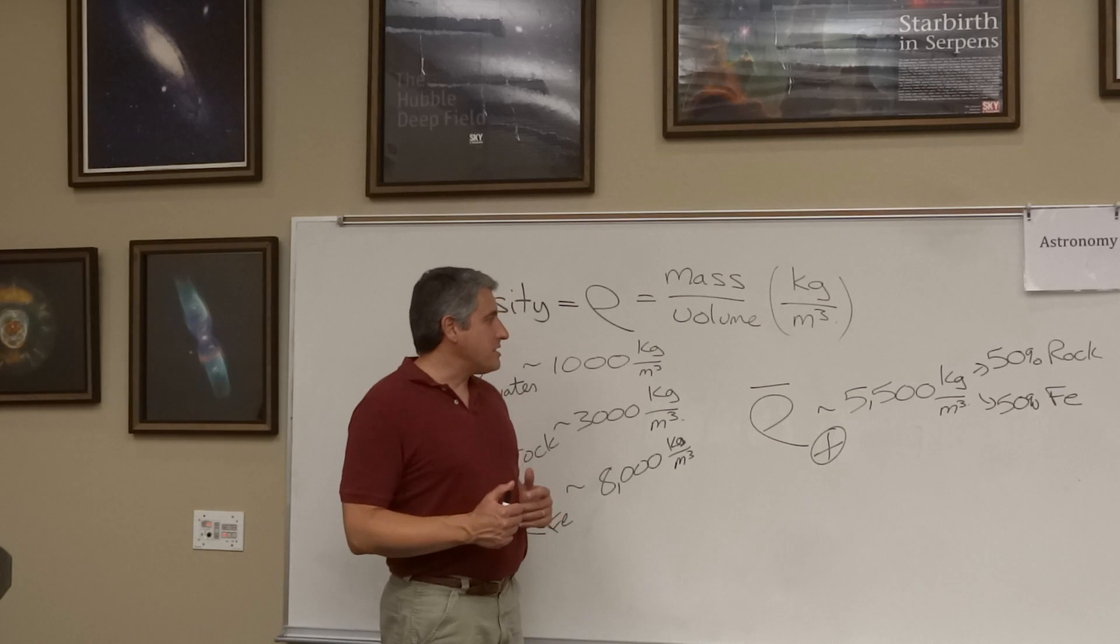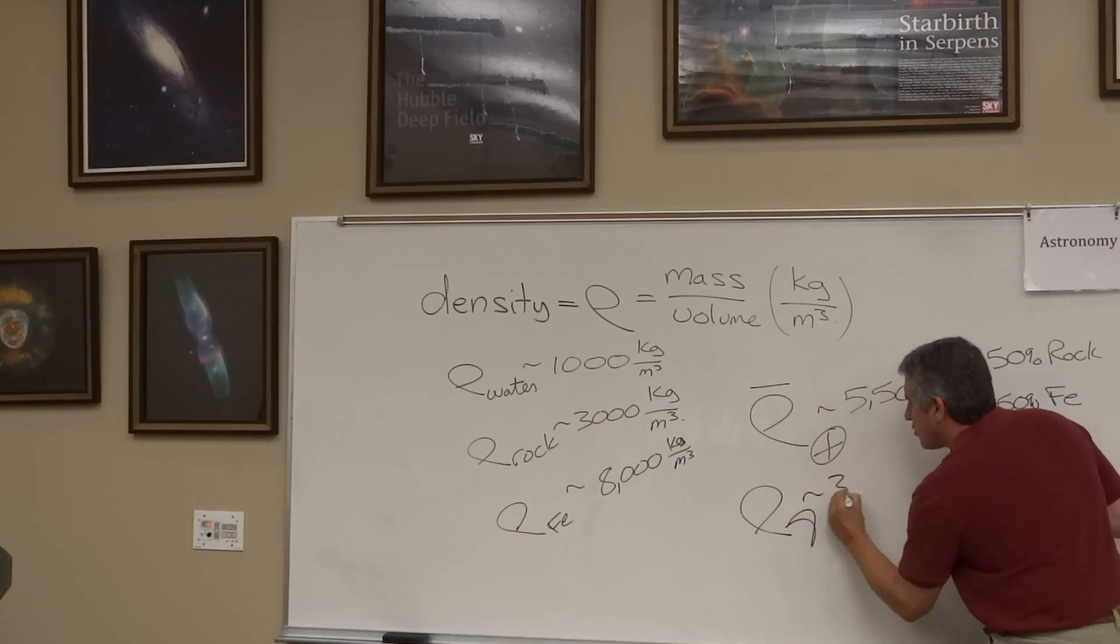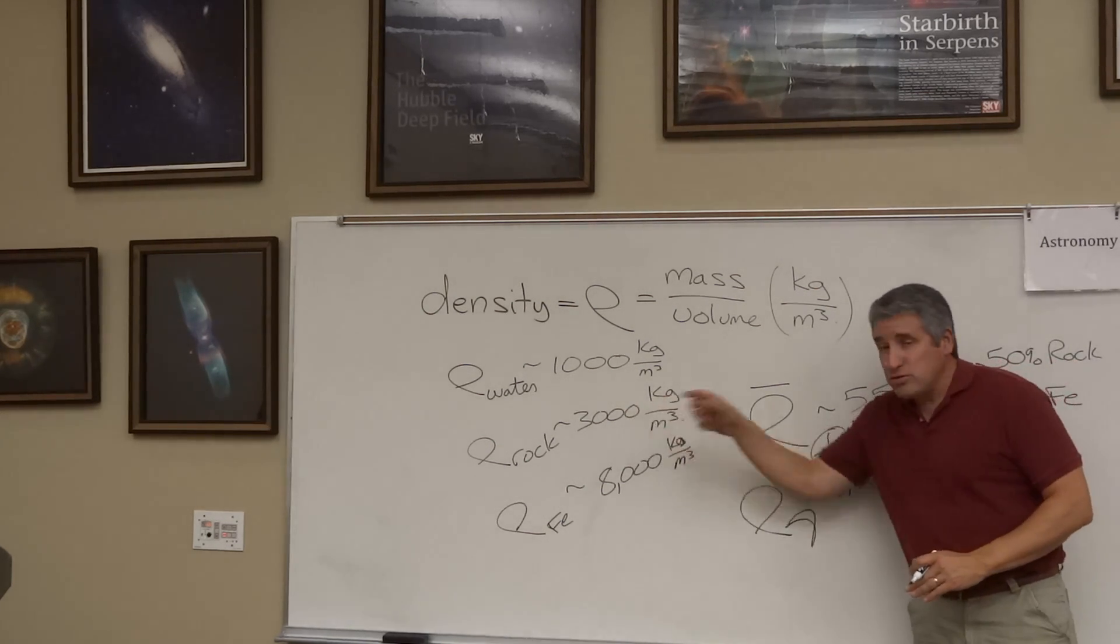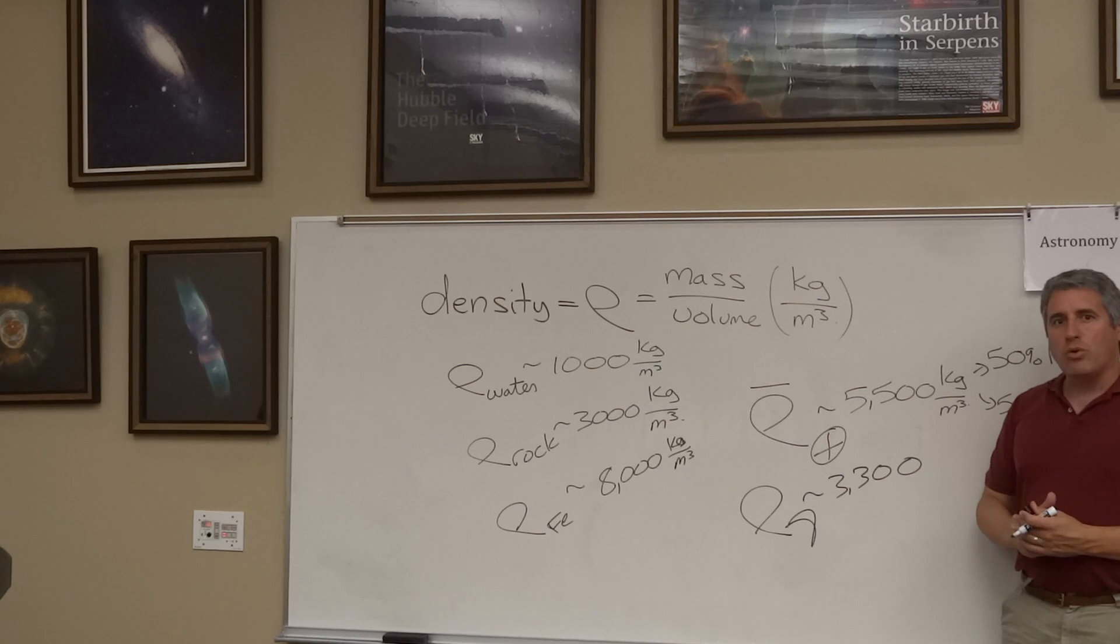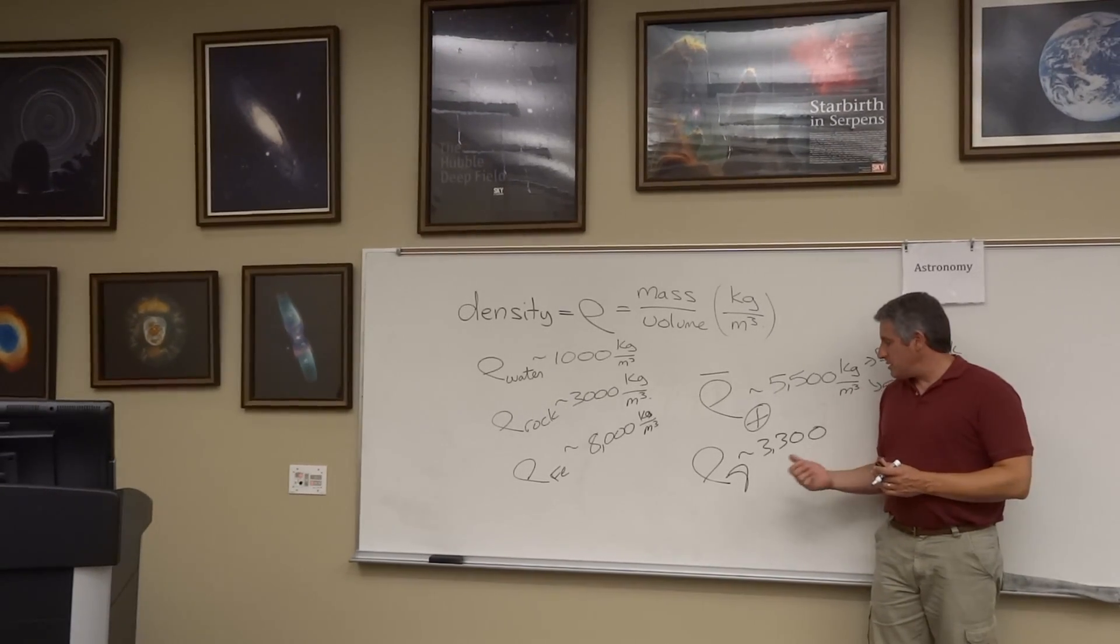By the same token, I can tell you that the average density of the moon. The density of the moon is 3,300. What does that imply? It implies the moon is mostly rock with a small iron core. As we discuss the formation history of the moon, this is going to be important.